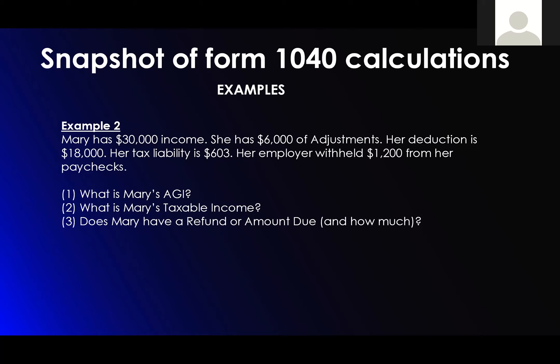Mary has thirty thousand dollars of income and six thousand dollars in adjustments, so her AGI is twenty-four thousand dollars. Her deduction is eighteen thousand dollars, giving her a taxable income of six thousand dollars. Her tax liability is six hundred and three dollars. Her employer withheld twelve hundred dollars. Twelve hundred minus six hundred and three equals five hundred and ninety-seven dollars — she gets a refund of five hundred and ninety-seven dollars.